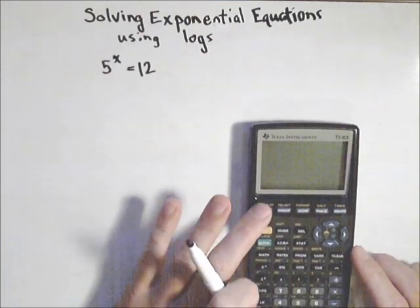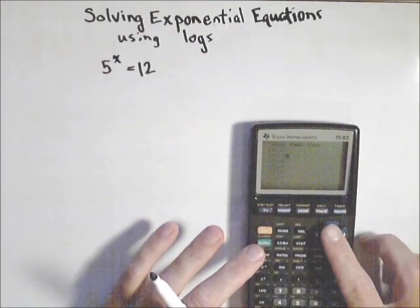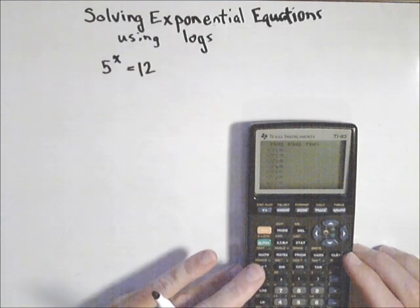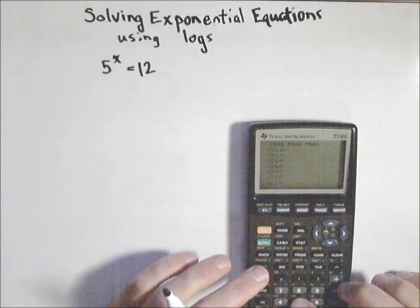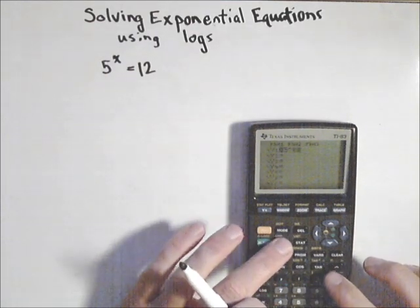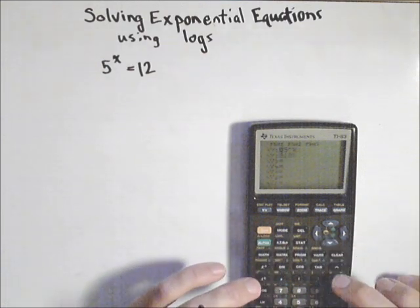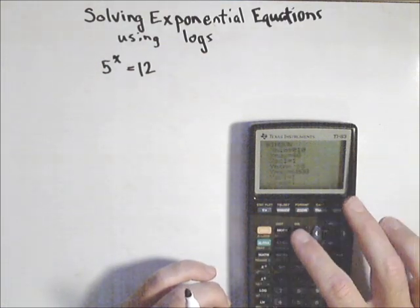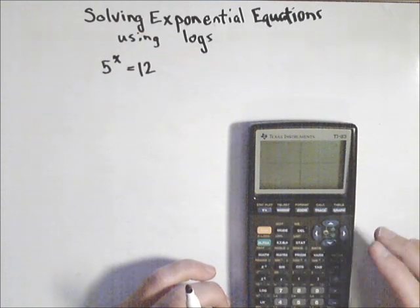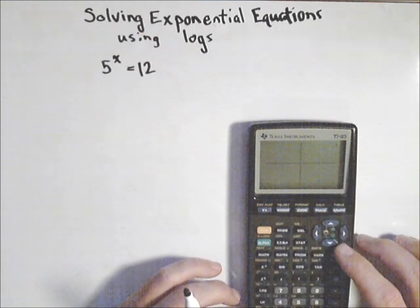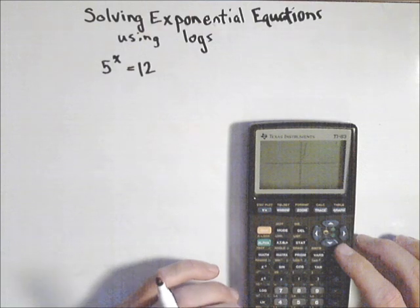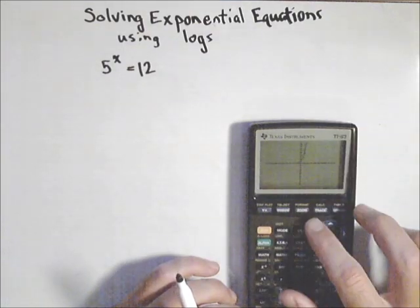Just to show you how we could do it real quick with a graphing calculator, then we'll talk about how we can use that to check. What we would do is we'd put in 5^x as a graph, we'd put in 12 as a graph, and now we do need to set up our window, because if I do a standard window, I'll see my exponential piece, but I won't see 12 because it only goes up to 10.